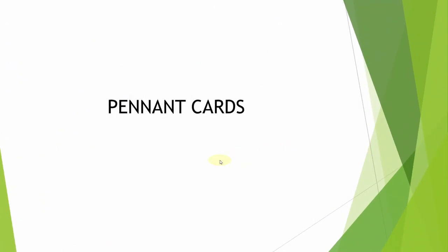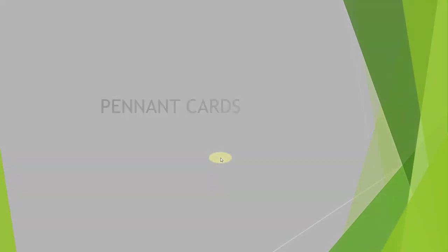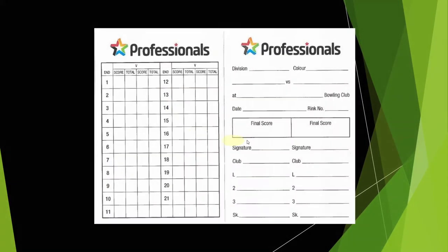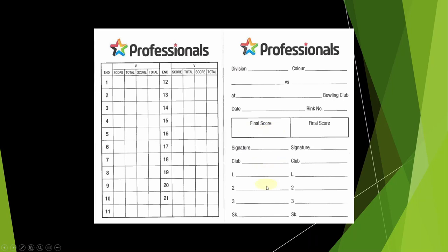Pennant cards — very elementary. Home side puts their teams in. Away team, put your sides in before you leave the club. Make sure you take them with you — don't forget them. And again, make sure you put your teams in before you leave, just in case your memory is not that good.